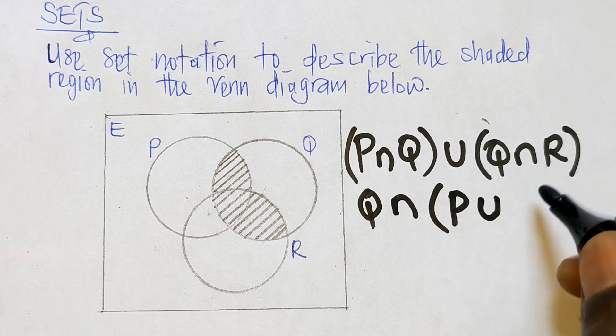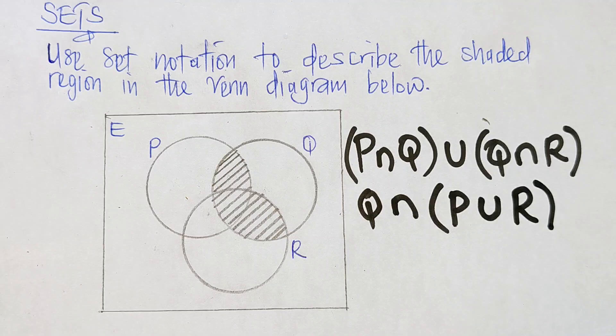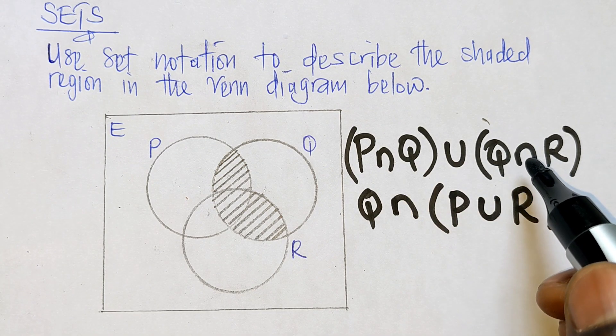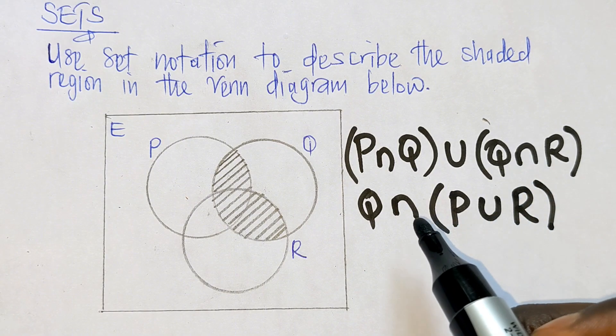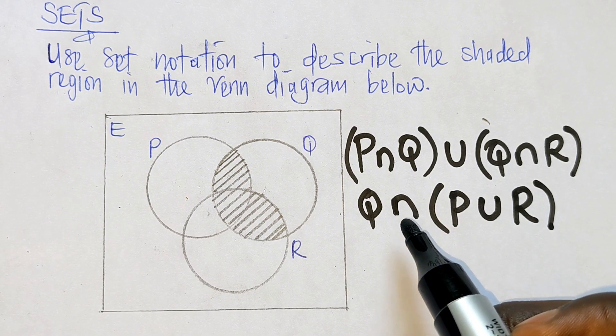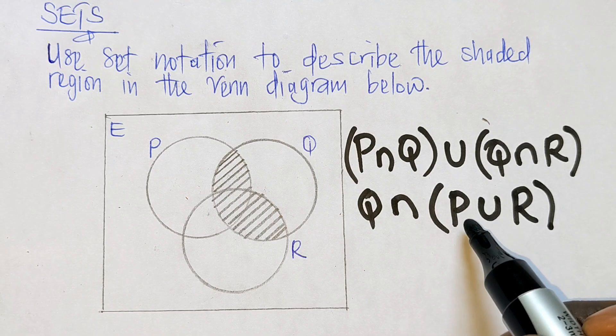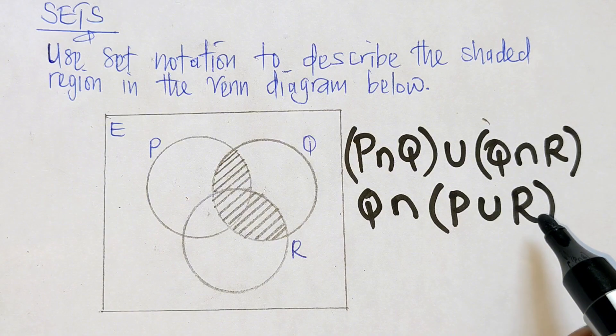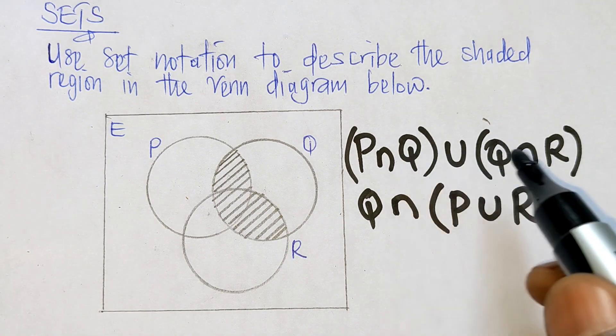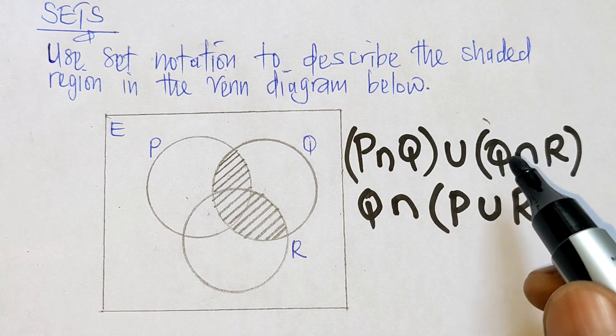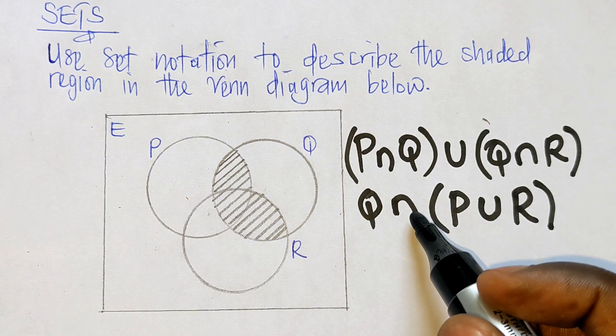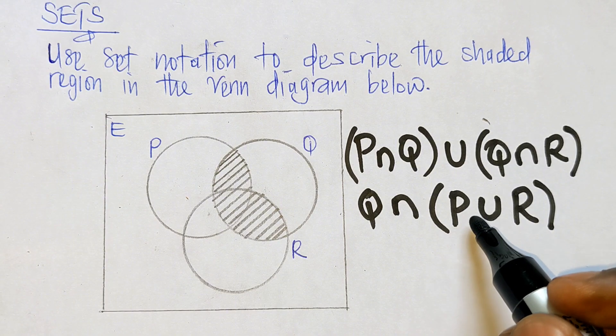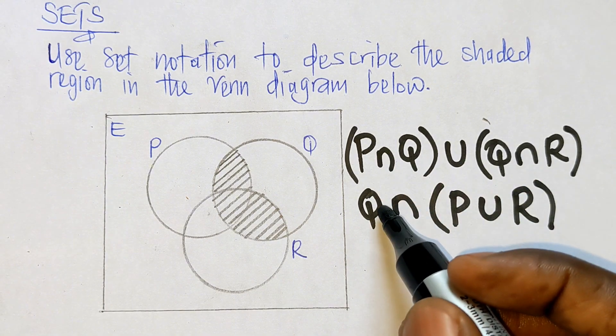So this means that the union of these two intersections that we came up with is the same as the intersection of the set Q and the union of P and R. So this here is the same as this if simplified.